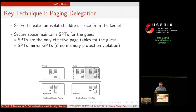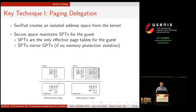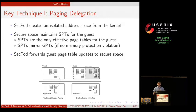The first technique is paging delegation. SecPod creates an isolated address space from the kernel, and this address space contains the shadow page table. This figure shows the difference between shadow page tables used in a traditional hypervisor and those used in SecPod. With traditional shadow paging, the hypervisor maintains shadow page tables, and whenever the guest wants to update the paging, it is trapped by the hypervisor, which checks the update and loads these shadow page tables in the hardware. This prevents use of the recent nested paging hardware. SecPod addresses this problem by using an isolated address space, and whenever there is a page table update, SecPod forwards this update to the secure space. With SecPod, secure tools can run on top of the latest nested paging hardware.